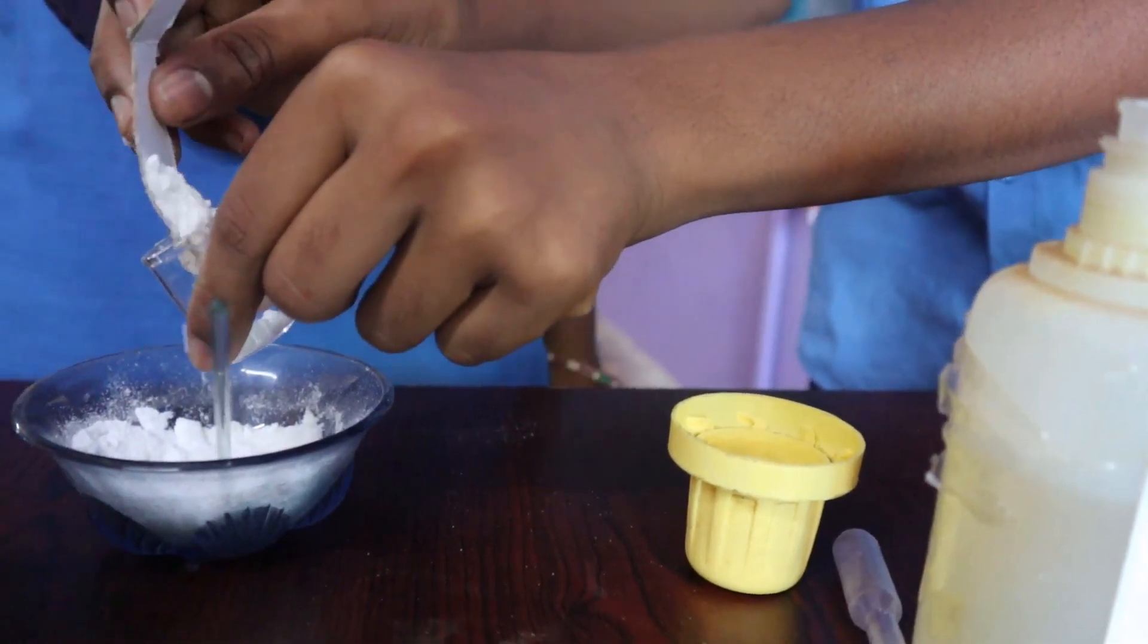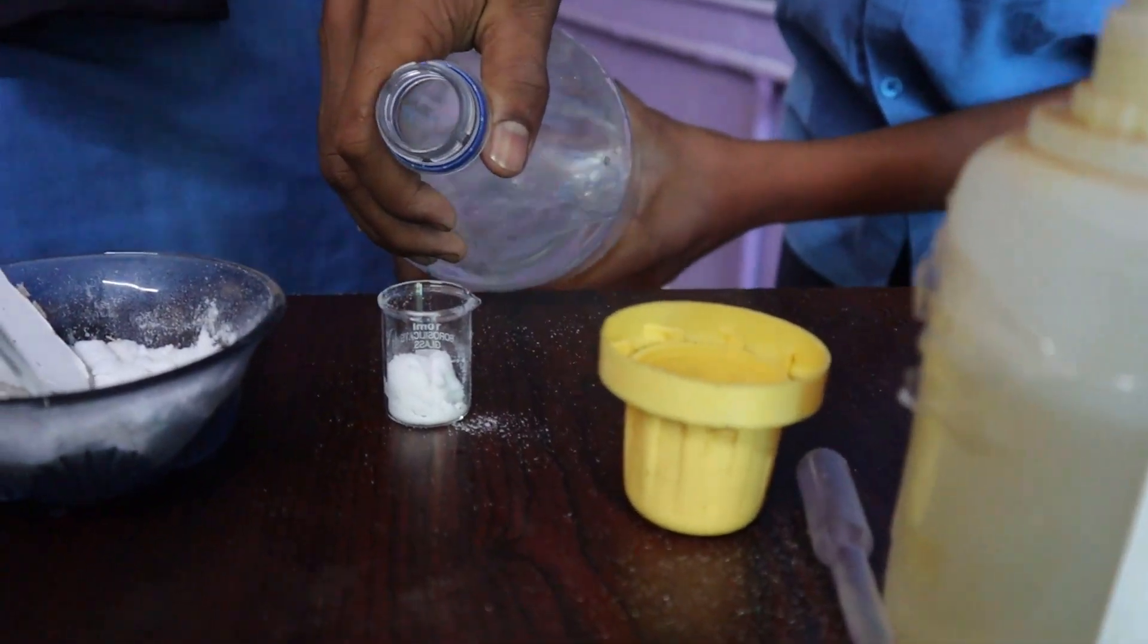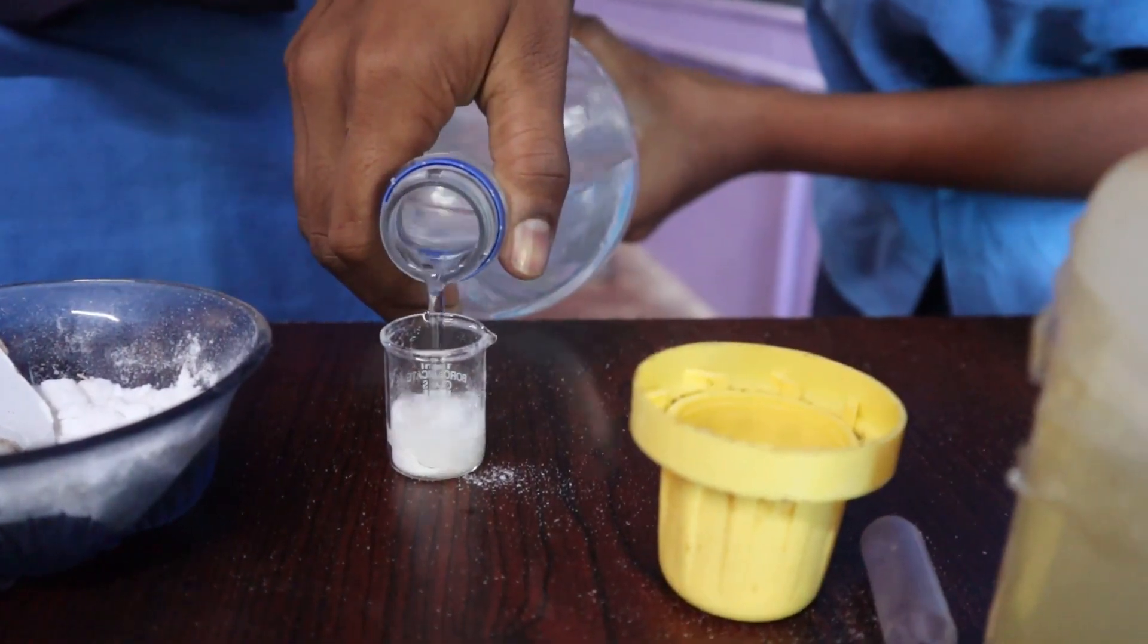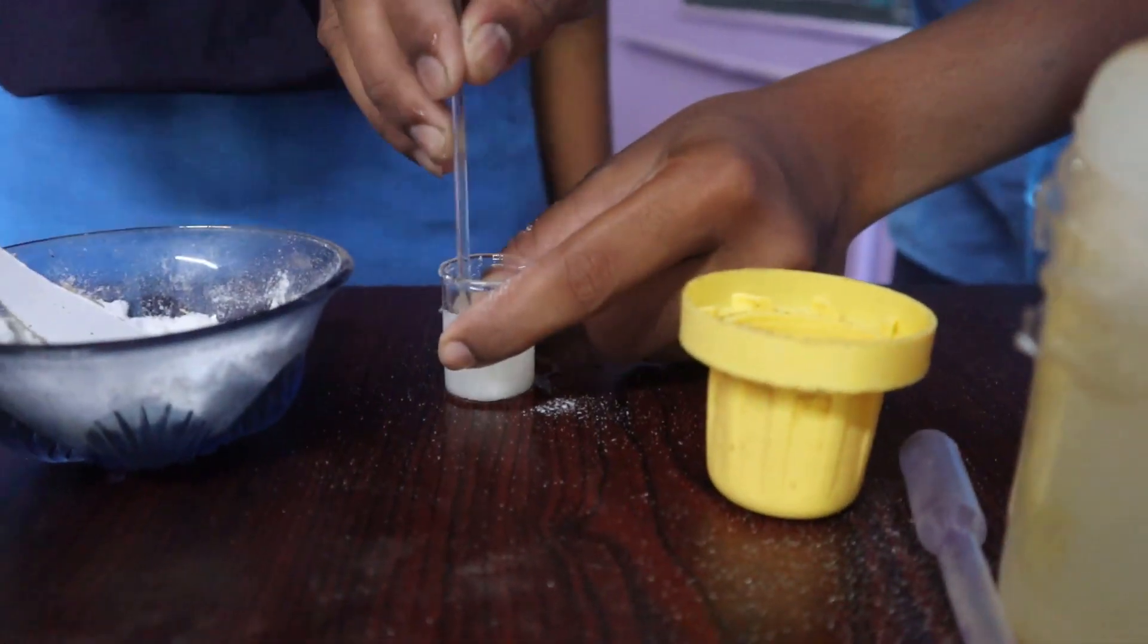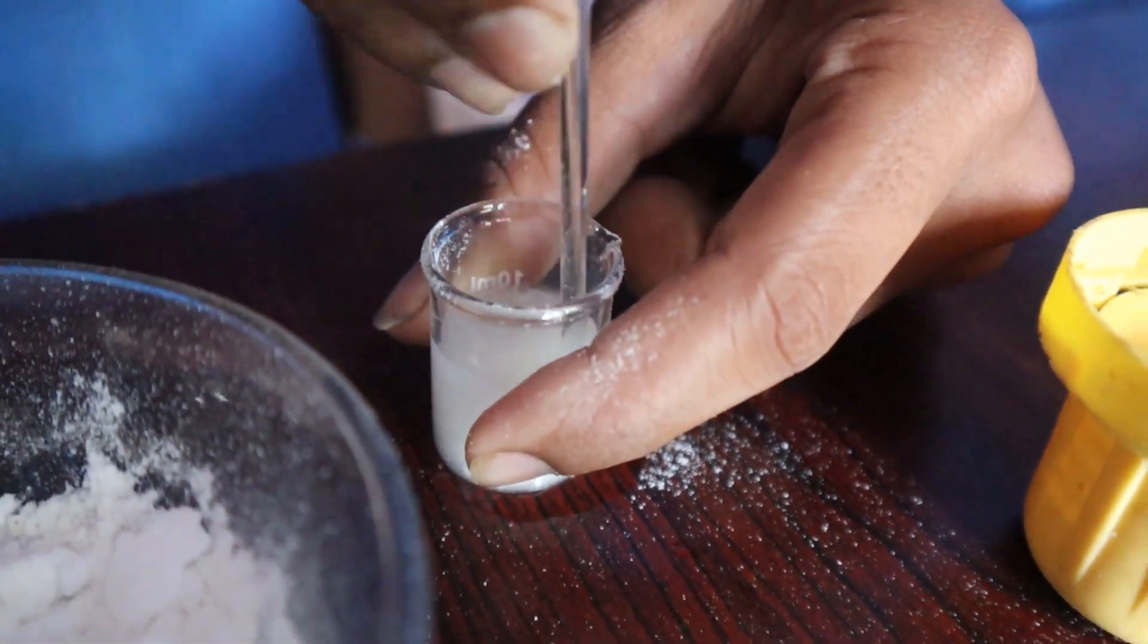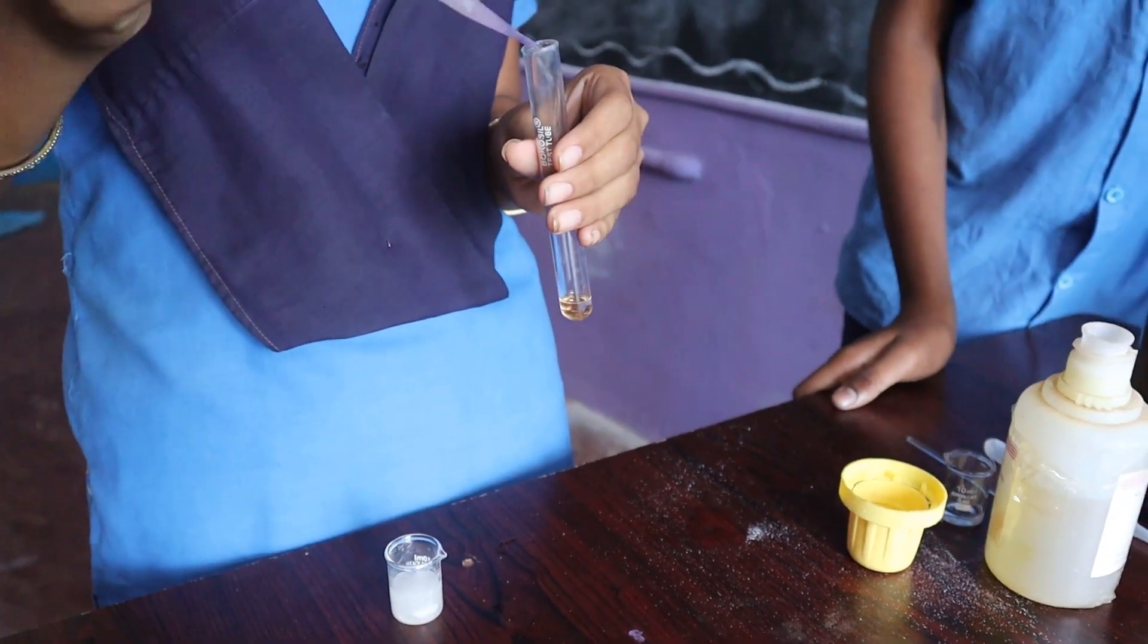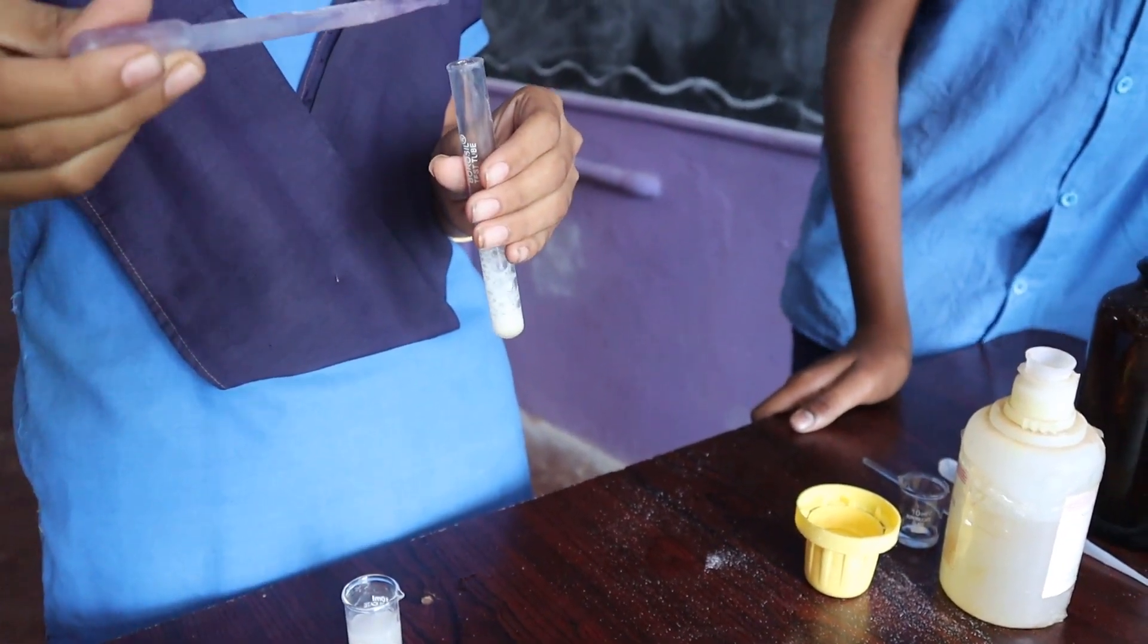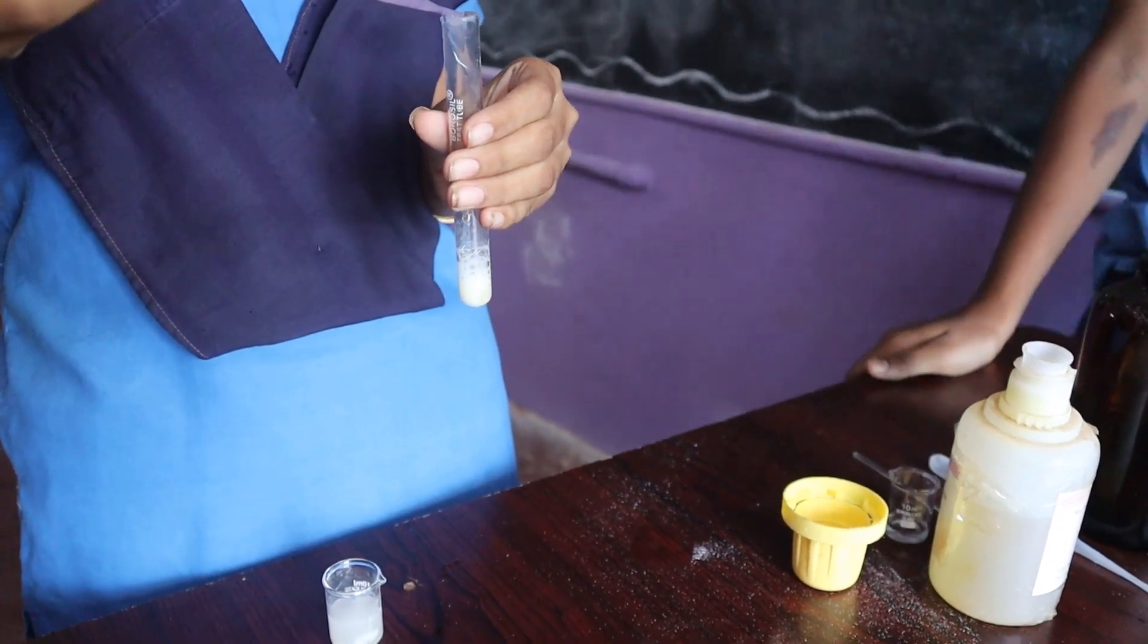Prepare baking soda solution in a small beaker. Add baking soda solution to hydrochloric acid solution dropwise and observe the color.